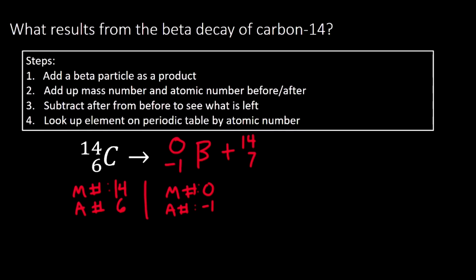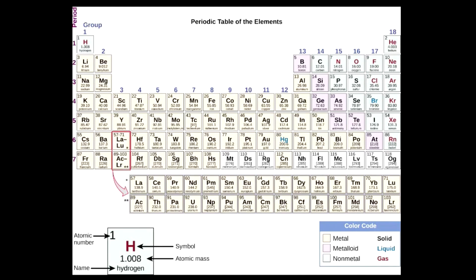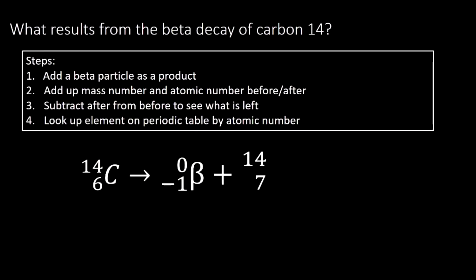We could have done that with the subtraction method, where we would have said 14 minus zero equals 14 for our mass number difference. Then we could have done the same thing for the atomic number, where we would have done six minus a negative one. That is really six plus one to give us seven. So two ways to think about that, the math way or just remembering that beta particles increase your atomic number by one. Now we need to look up element number seven. That's nitrogen. So we get, in our final nuclear reaction, carbon-14 undergoing beta decay and leaving behind nitrogen.